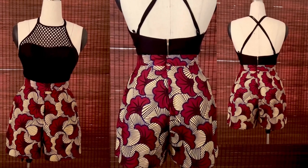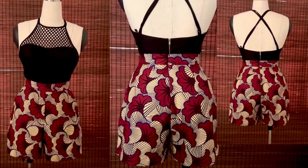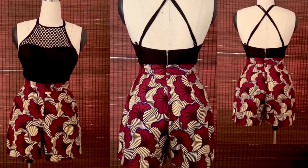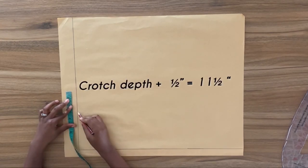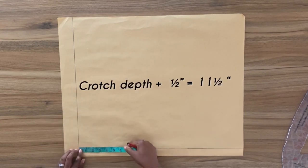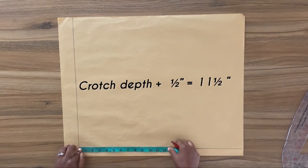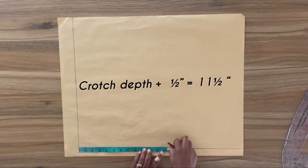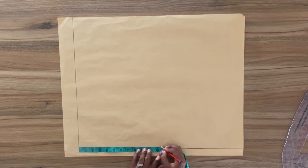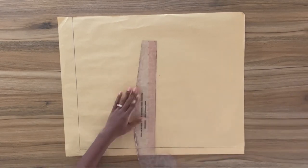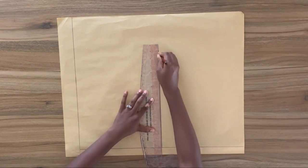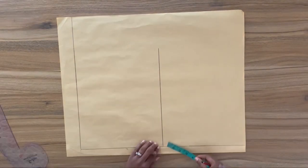Without wasting time, let's jump right into this tutorial. From the top line, which is the waistline, I'm going to measure down my crotch depth measurement plus half of an inch — this for me is 11 and a half inches. Now I'm going to square a horizontal line right across this point. This line is my crotch line.